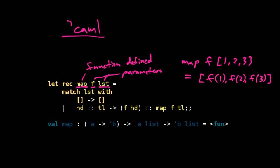So in this example here, map is being defined with this let rec. So this is how you define recursive functions. So what's a recursive function? A recursive function calls itself. Let's look at the definition here.